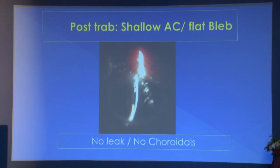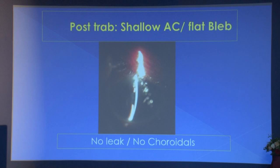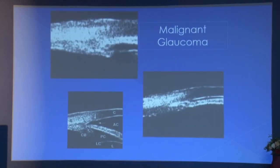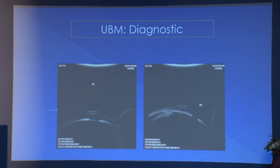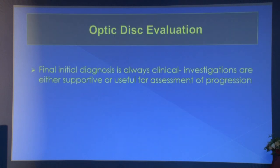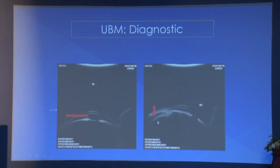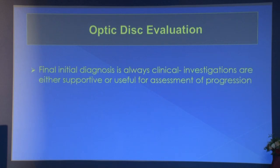In post-operative shallow anterior chamber, UBM can identify the cause though it is difficult to perform. In malignant glaucoma, UBM shows specific findings — the ciliary body rotates anteriorly and the anterior chamber is very shallow, which resolves after treatment. Topiramate drug-induced bilateral angle closure shows irregular shallowing of the anterior chamber on UBM, with cilio-choroidal effusion visible in these cases.